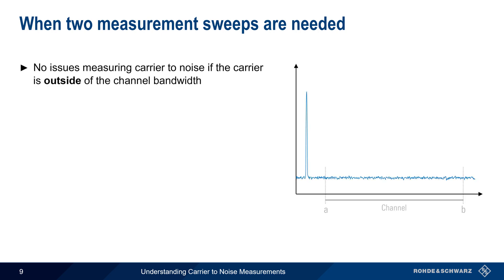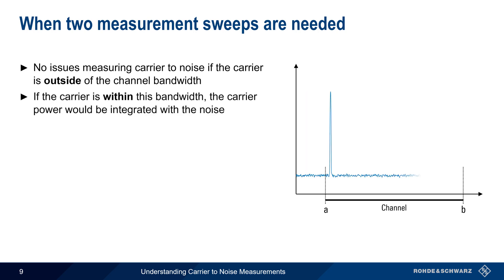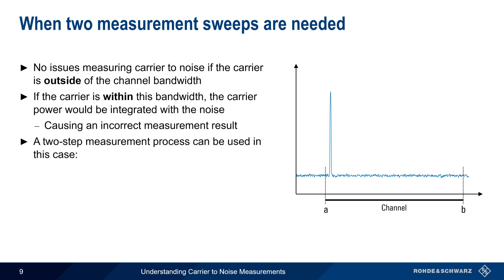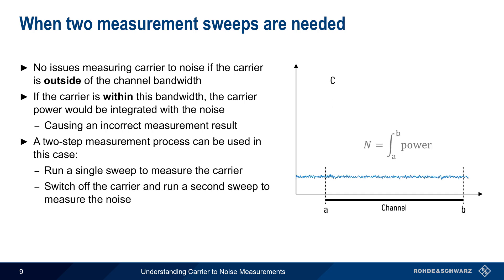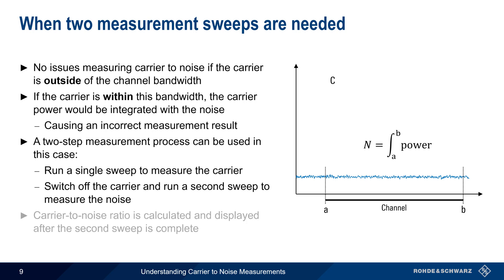If the carrier lies outside of the user-defined channel bandwidth, as shown here, only a single sweep is needed to measure both the carrier and the noise. However, if the carrier were within the channel bandwidth, the carrier power would be included when integrating over the channel, and the noise measurement result would be incorrectly high. In this case, a two-step measurement process is needed. First, a single sweep is run and the power in the carrier is measured. Then the carrier is switched off and a second sweep is run to measure the noise alone. In this way, the carrier-to-noise ratio can be calculated and displayed automatically by the spectrum analyzer after the second measurement sweep is complete.